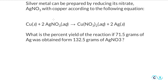We need to determine the percent yield of a reaction that has produced 71.5 grams of silver from 132.5 grams of silver nitrate. In order to determine the percent yield, let's first remember the formula: the percent yield of the reaction is the ratio of the actual yield divided by the theoretical yield, multiplied by 100.